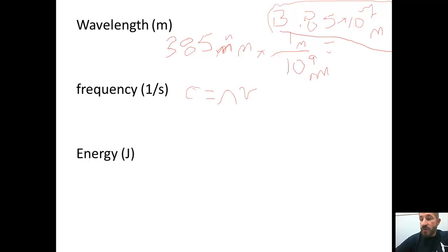What we're going to do now is change this formula around to say wavelength is equal to speed of light divided by frequency. So what we're going to do is take the speed of light, which is 3.0 times 10 to the 8th meters, and all this is over seconds.